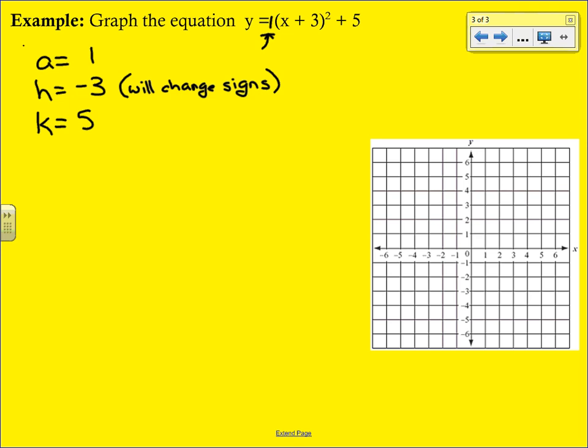Next we're going to identify and plot our axis of symmetry, and that is the equation x equals -3. We're just taking the h value right from our equation, and we are going to graph that vertical line right through the -3.